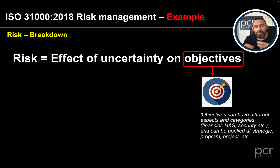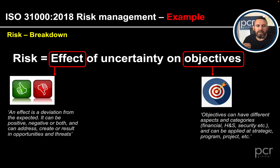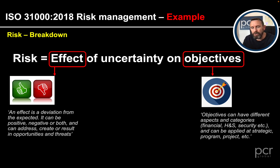Each of those objectives can be affected. That's the target we're aiming for. The effect — in ISO 31000 — is a deviation from the expected. It can be positive, negative, or both, and can address, create, or result in opportunities and threats. There is an upside to risk: if we exploit it, take advantage, take a punt — this is opportunity management. So the ISO 31000 definition of risk covers both opportunity management and threat management.